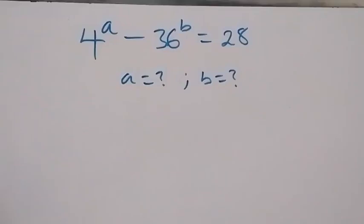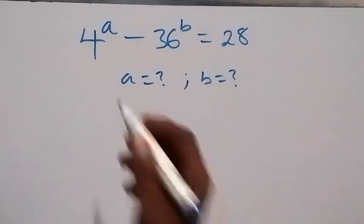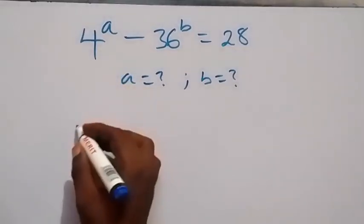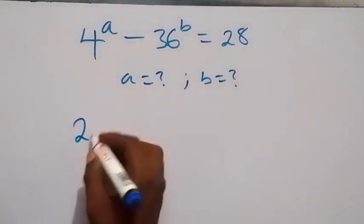Hello, you are welcome. How to solve this nice exponent problem: 4 raised to the power a minus 36 raised to the power b equals 28. From here we need to find the value of a and b. Let's write this as 2 square...